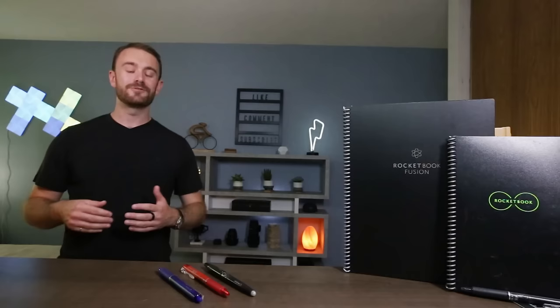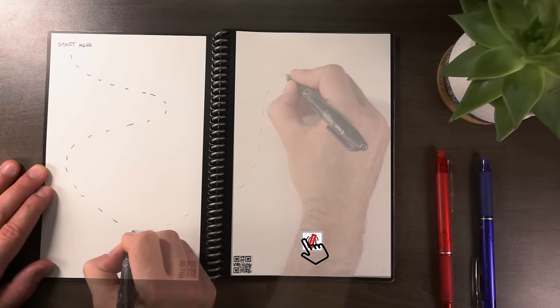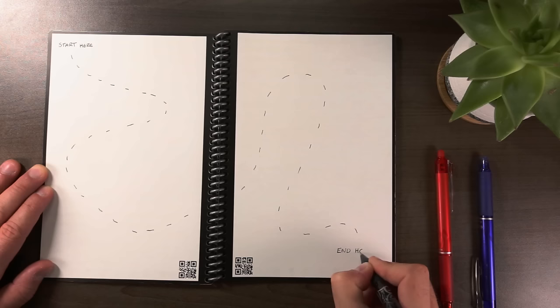I also recommend starting notes on the back side of pages if you think it's going to extend to a second page. This allows more time for the ink on the first page to dry. It won't help if you're taking more than a two-page note, but it is good to get into the habit of doing this for shorter notes to avoid smudging.